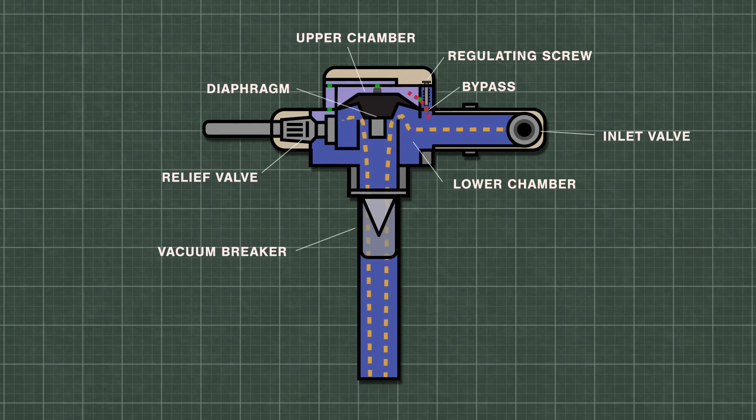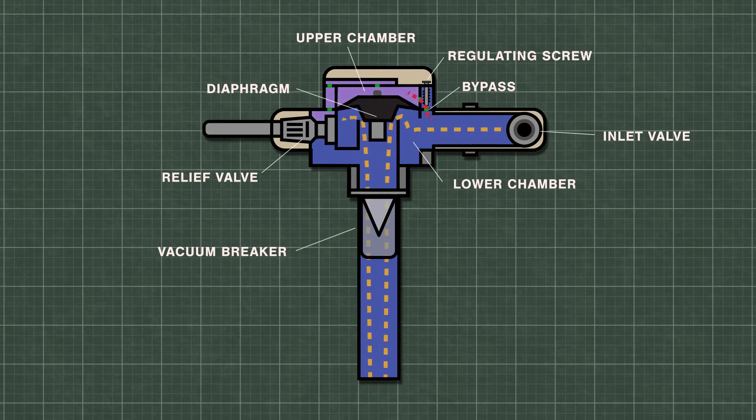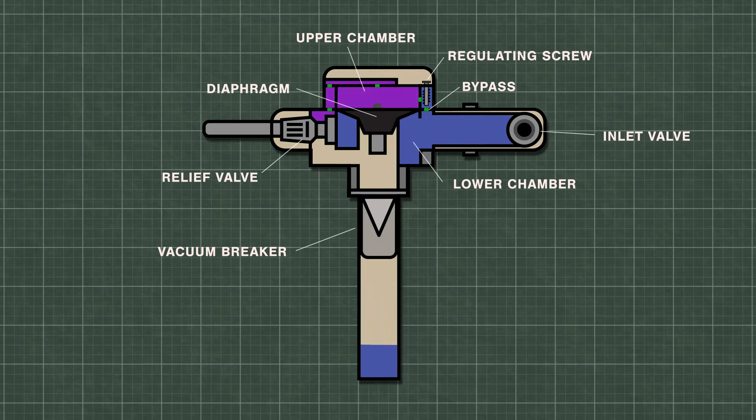As the water flows, some of the water slowly travels through the bypass and will eventually fill the upper chamber. The flush will continue until the pressure pushes the diaphragm down once again.